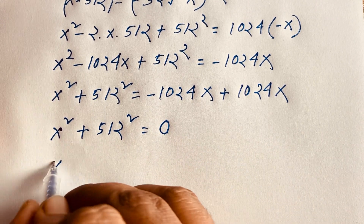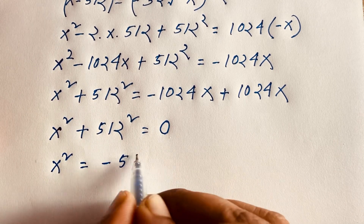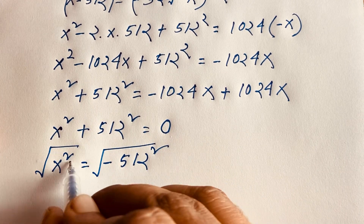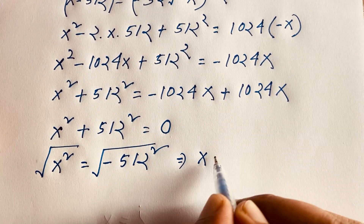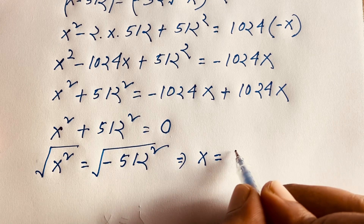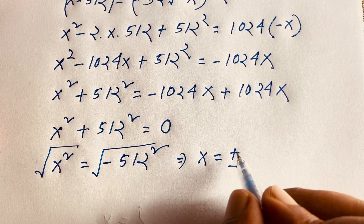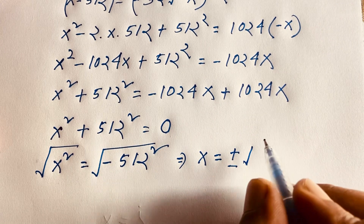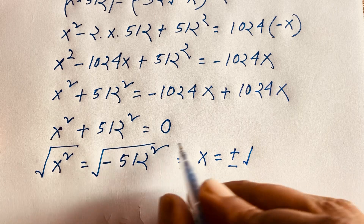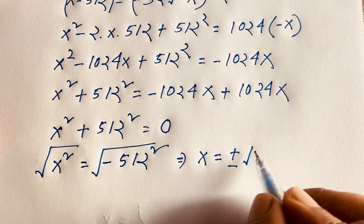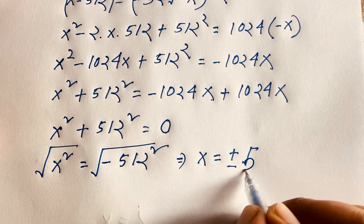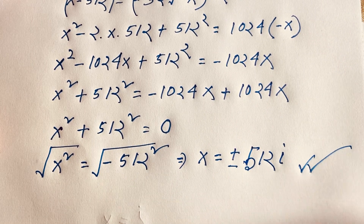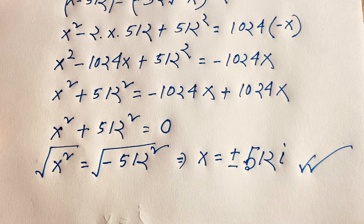If I move 512 squared to this side, it will be x squared is equal to negative 512 squared. Now I use both sides square root — the square on x is cancelled, and we find x is equal to plus or minus the square root of 512 squared times square root of negative 1, which gives x equals plus or minus 512i. This is our final answer to this math olympiad question.